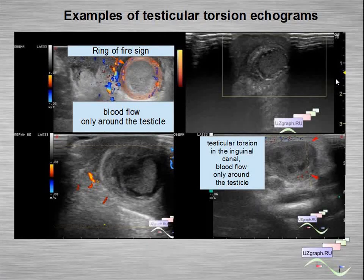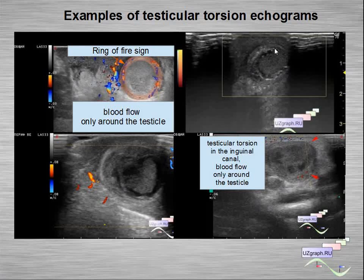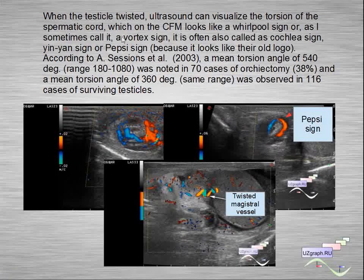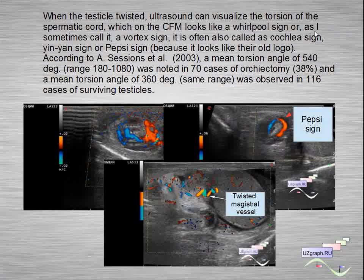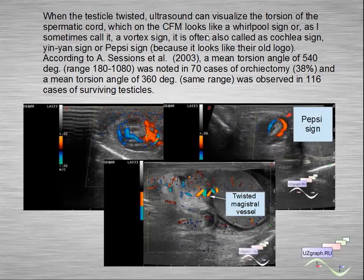Examples of testicular torsion echograms: we can see the sign of ring of fire, with no blood flow inside the testicle — only around it. Another echogram shows necrosis in torsion testicle. Another testicular torsion with necrosis, and another testicular torsion with necrosis inside the inguinal canal. When the testicle is twisted, ultrasound can visualize the torsion of the spermatic cord, which on color flow mode looks like a whirlpool sign — sometimes called a vortex sign, cochlear sign, Inyan sign, or Pepsi sign.